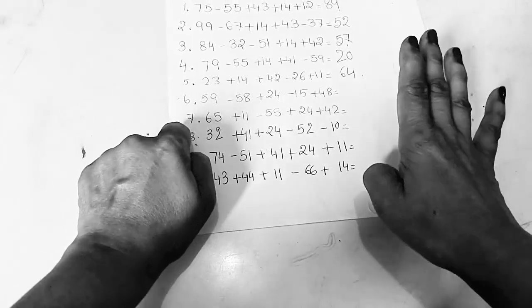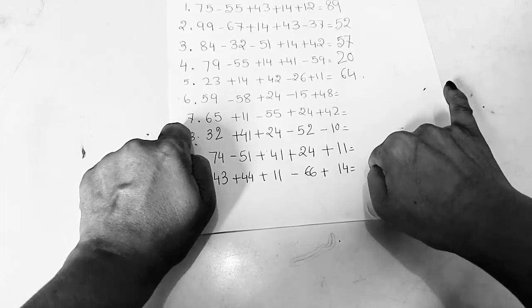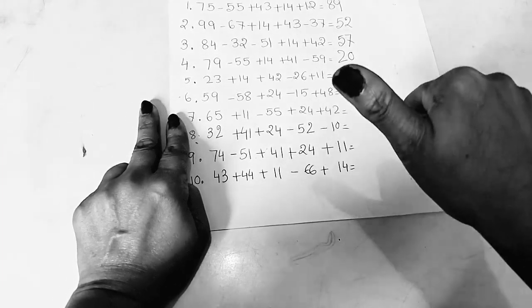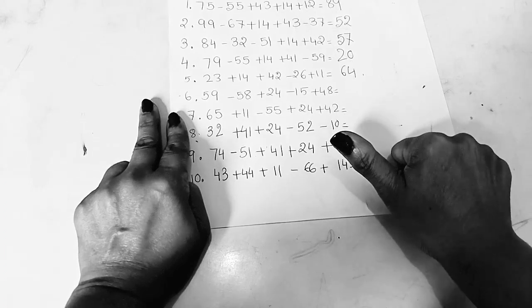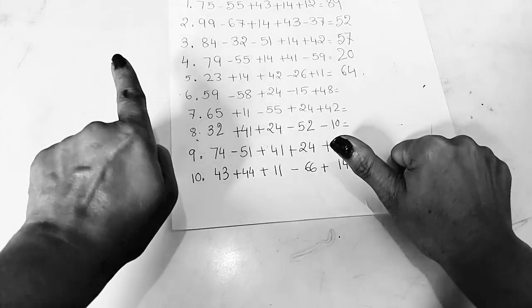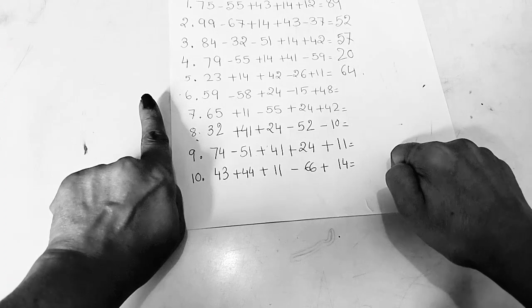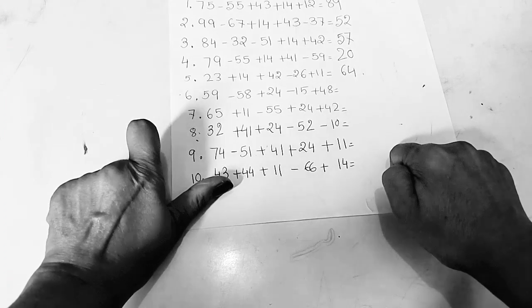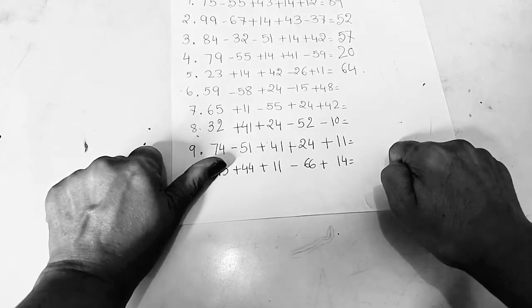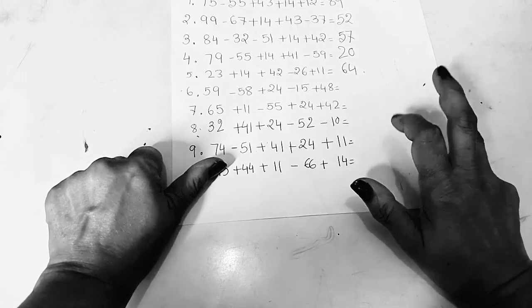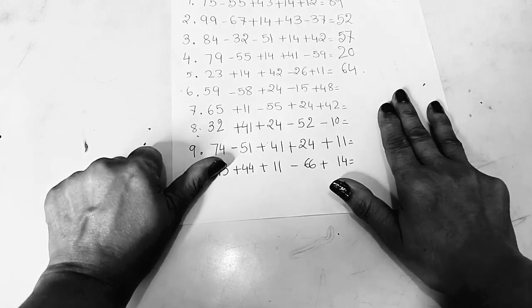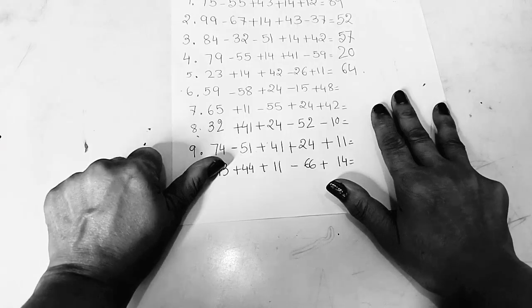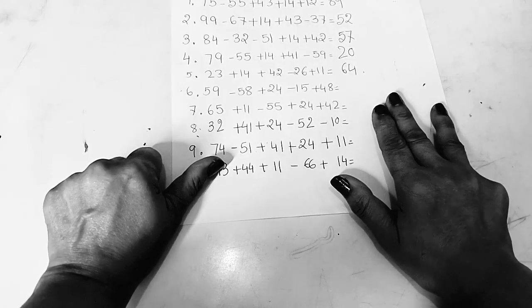Number six: 59 minus 58 — 5, 6, 7, 8 — one finger. Then again two. Then plus four: plus five minus one gives four. Then minus 15. Then again plus four: plus five minus one. And 8 — 5, 6, 7, 8. My answer will be 58.